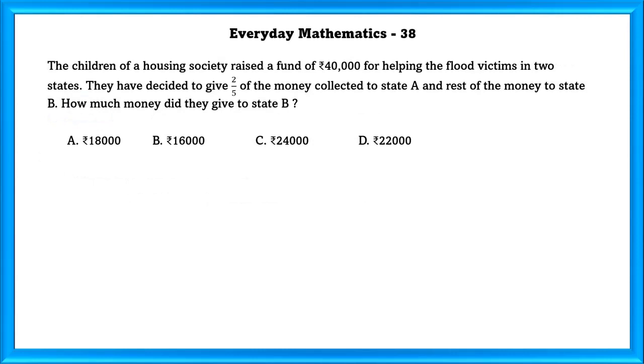Everyday Mathematics Question Number 38: The children of a housing society raised a fund of 40,000 rupees for helping the flood victims in two states. They have decided to give 2/5 of the money collected to state A and rest of the money to state B. How much money did they give state B?